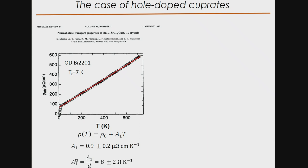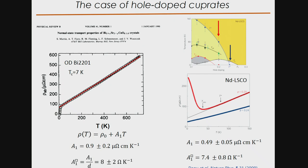To put some numbers on the magnitude of the slope of the T-linear resistivity, I make a simple fit with ρ = ρ₀ + A₁T. The A₁ coefficient is of the order of 1 μΩ·cm/K. I renormalize this coefficient by the interplane distance to compare numbers between different families. When I do that, I find that the A₁² coefficient for this compound is of the order of 8 Ω/K.